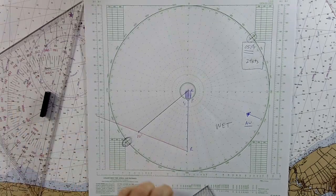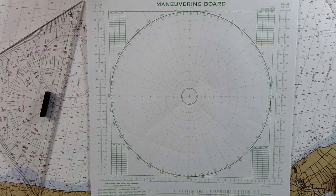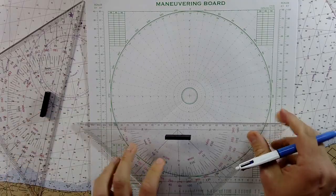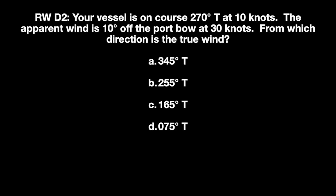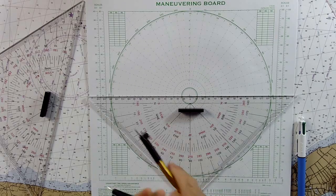Let's do another practice problem. In this case, your vessel is on course 270 at 10 knots. So we'll go 270, and we'll also use a 3 to 1 scale for this one, just to be safe.